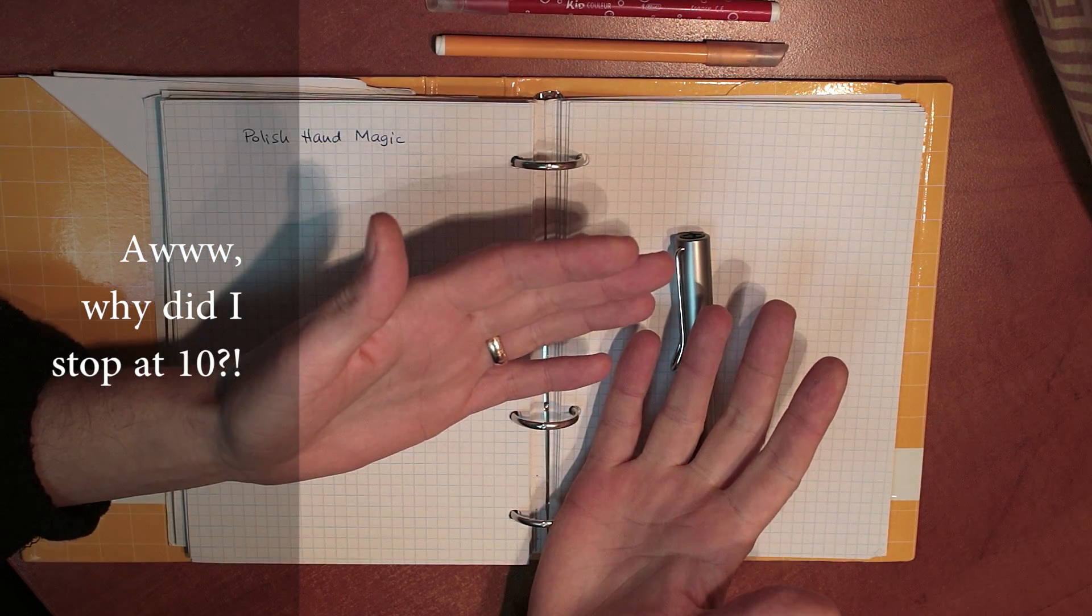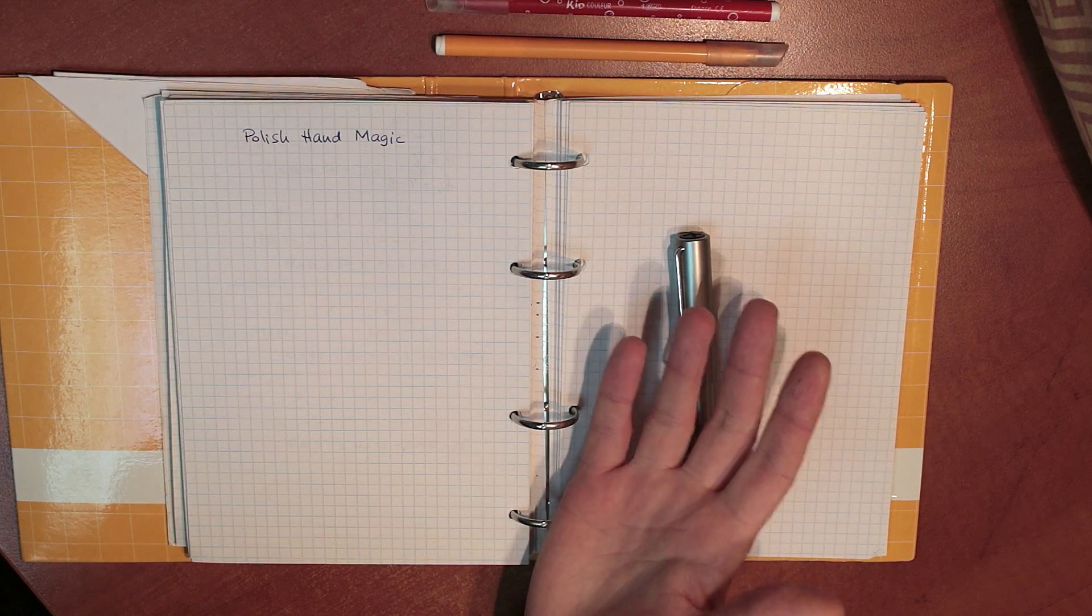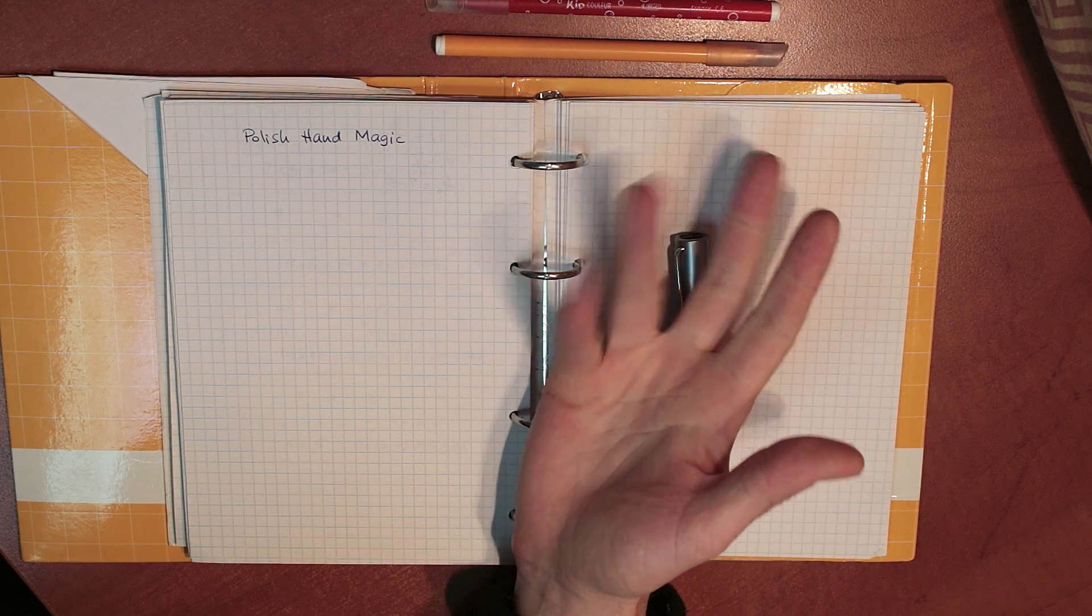In the Polish hand magic trick, you remove one of the hands, so you're left with 5, 6, 7, 8, 9, 10.